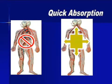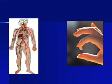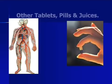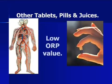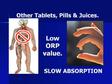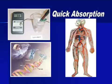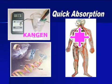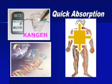This quick absorption hydrates the body easily. It also enables quick delivery of antioxidants into the bloodstream and into the cells. Other antioxidants in the form of tablets, pills, and fruit juices not only have low ORP, they also sit in the stomach and do not get absorbed easily. Meanwhile, Kangen Water not only has strong ORP, it also reaches the cell immediately.